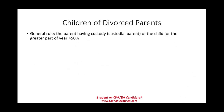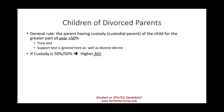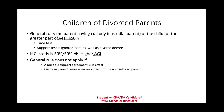The second exception covers children of divorced parents. The general rule is that the custodial parent — the one the child spends more than 50% of the time with — usually claims the dependent. The support test is ignored here. If custody is 50-50, the parent with the higher adjusted gross income claims the dependent. The general rule does not apply if there's a multiple support agreement in effect, or if the custodial parent releases their right to claim the dependent.